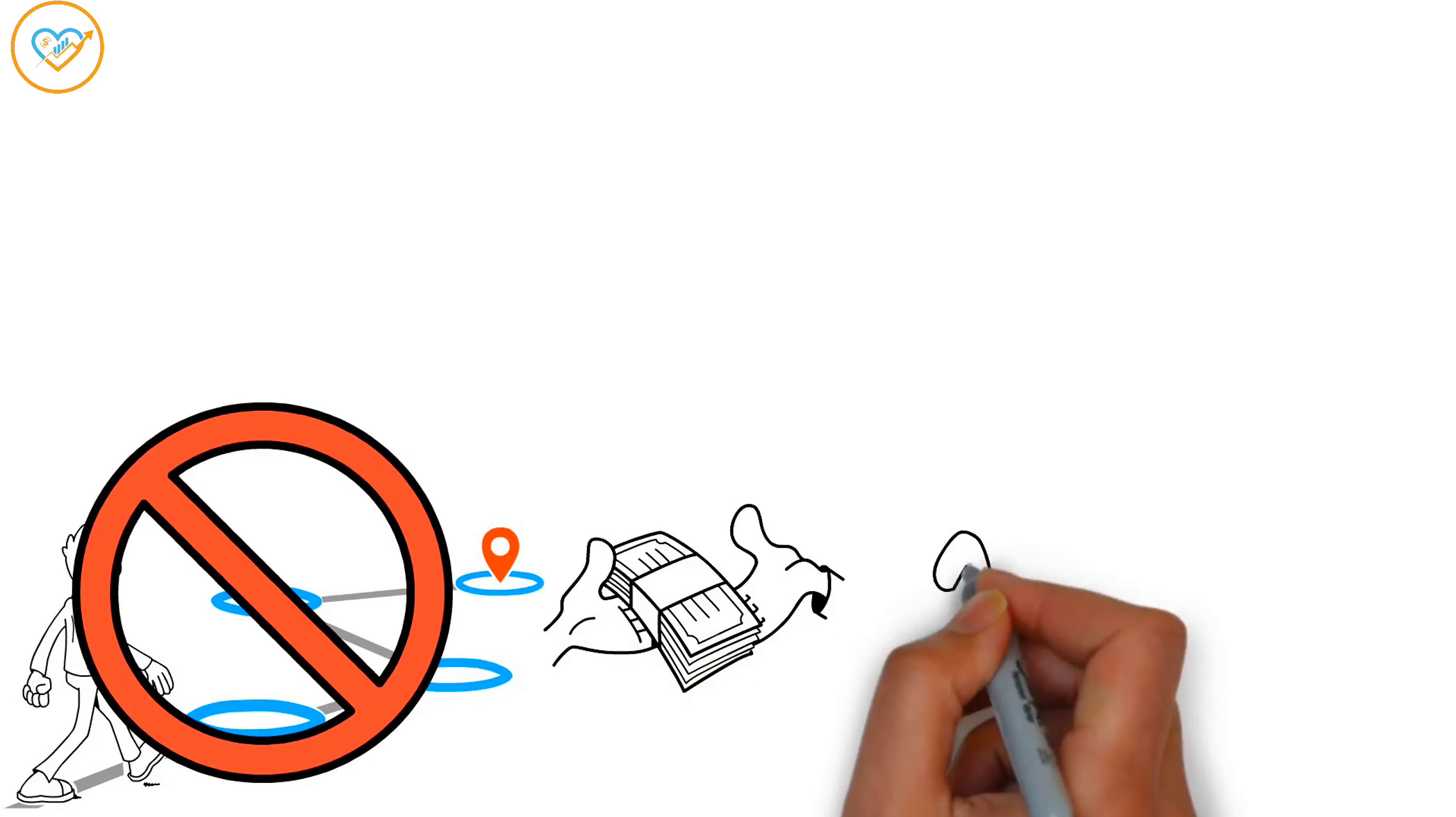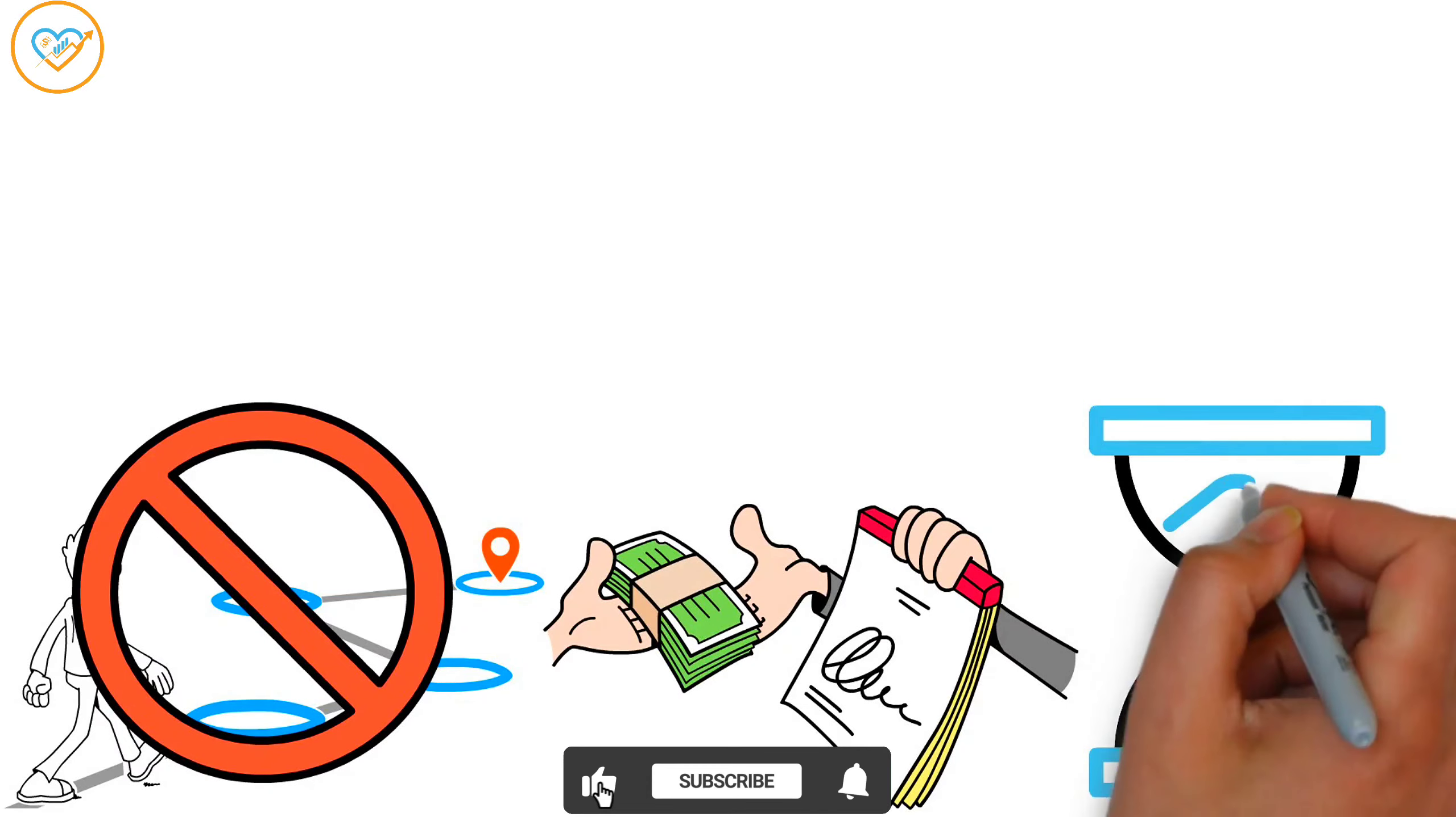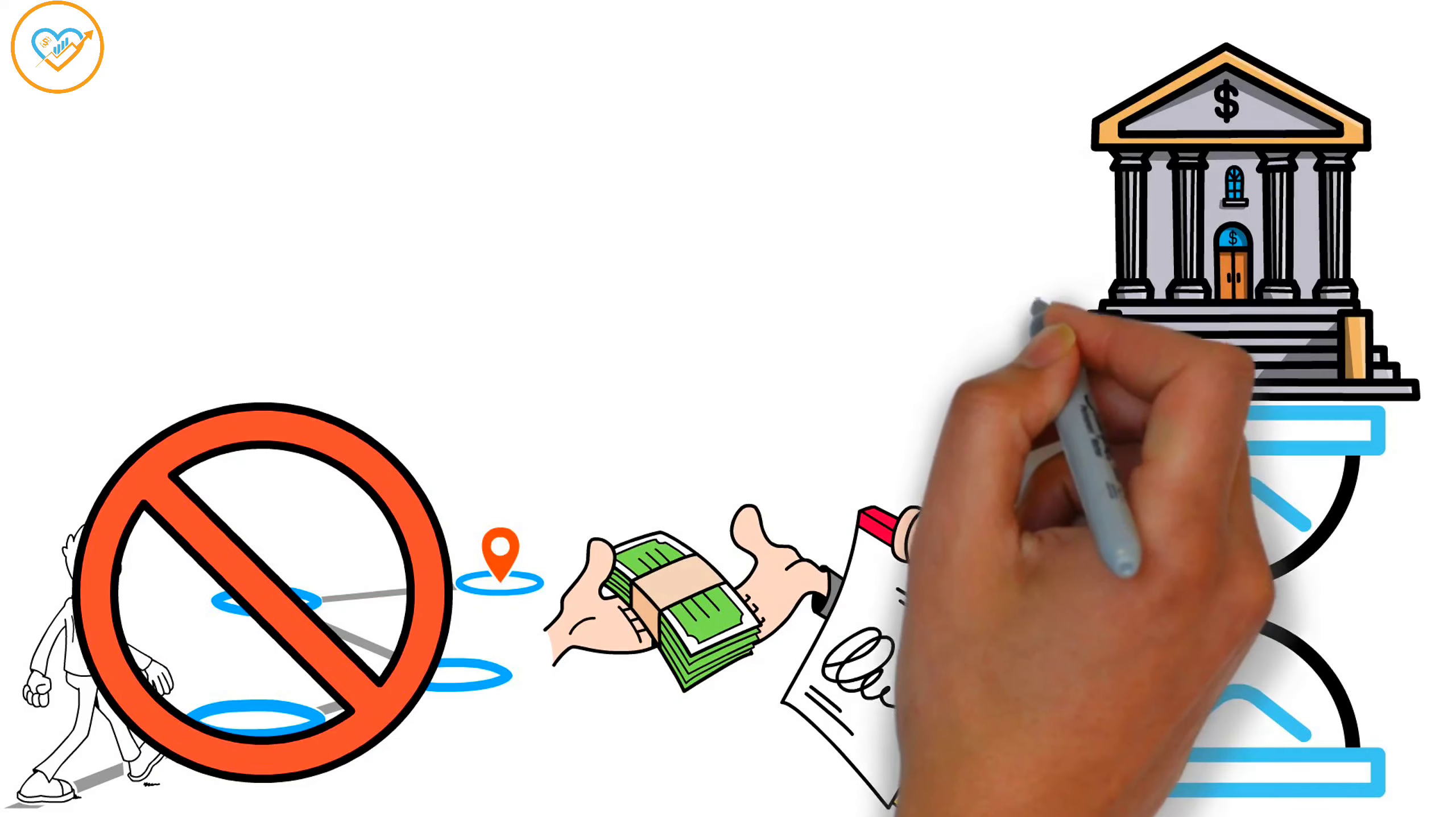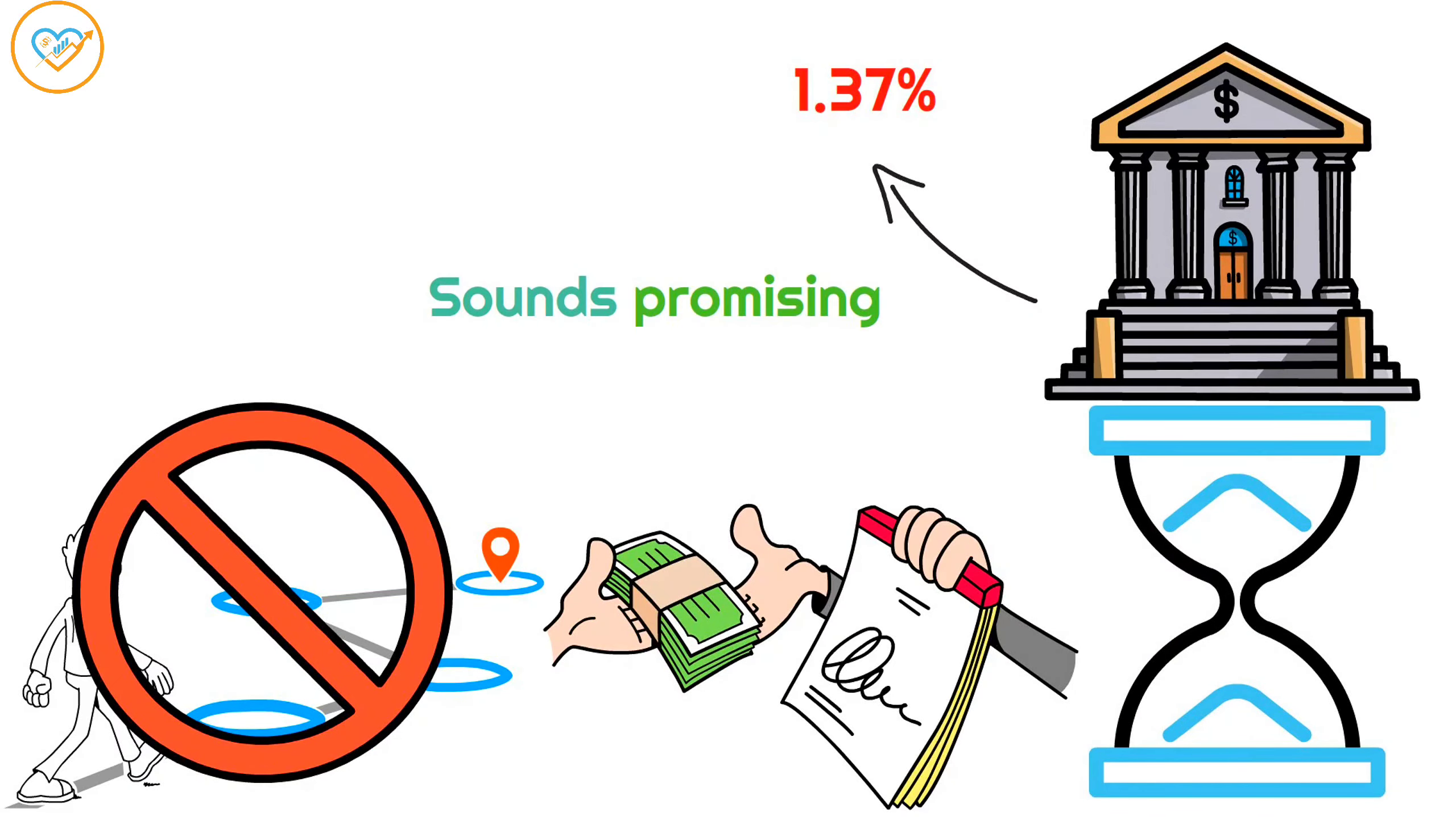Now, let's focus on CDs or certificates of deposit. These financial instruments tie up your money for a period of time and offer slightly higher returns than banks. However, the average 5-year CD rate is 1.37%. Sounds promising, right?